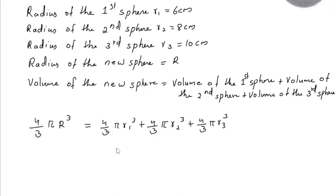Here 4 by 3 pi is common. So 4 by 3 pi inside the bracket, r1 cube plus r2 cube plus r3 cube.